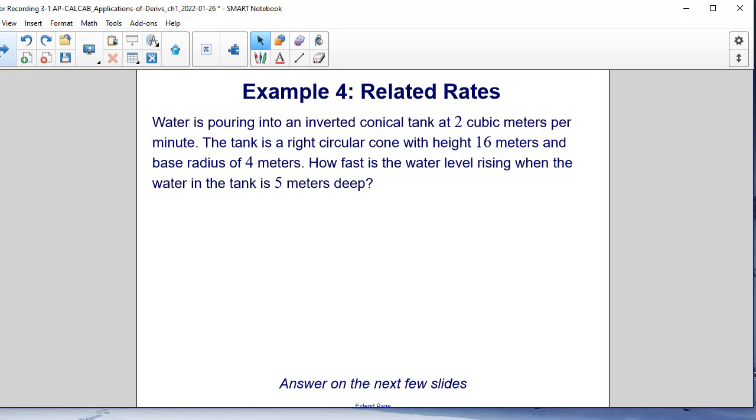Water is pouring into an inverted conical tank at 2 cubic meters per minute. The tank is a right circular cone with a height of 16 meters and a base radius of 4 meters. How fast is the water rising when the water in the tank is 5 meters deep?